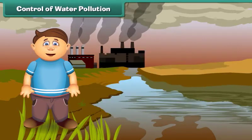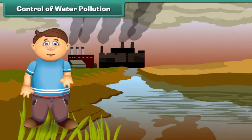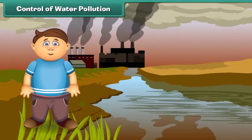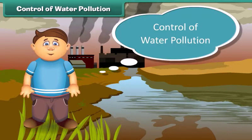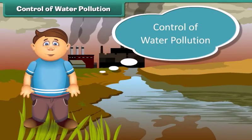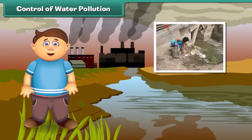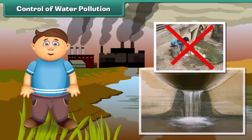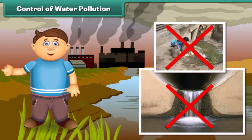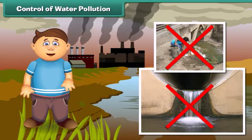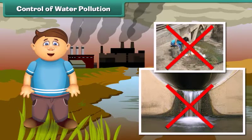Can we control water pollution? To control water pollution, we should not dispose garbage and harmful chemicals directly into ponds, lakes and rivers.